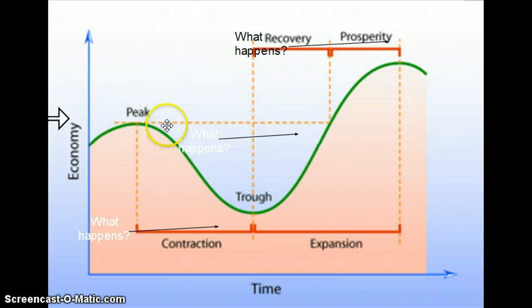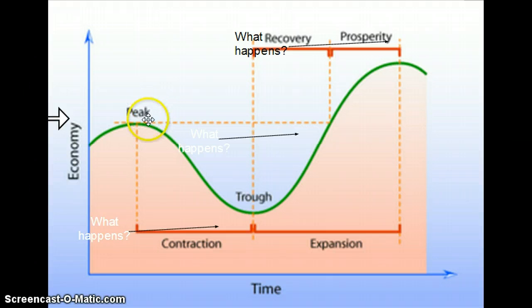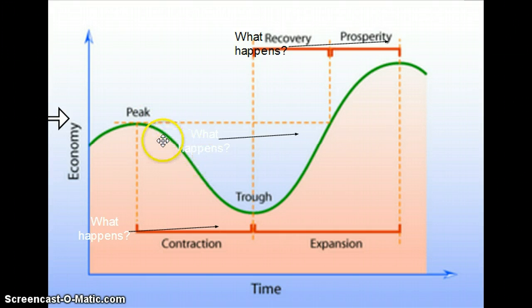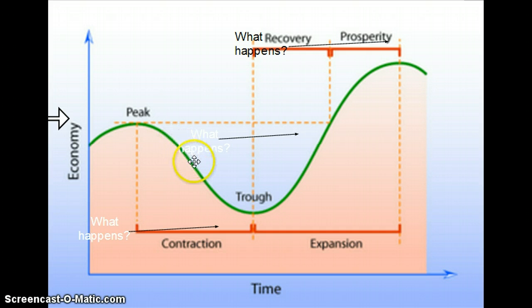This downturn can happen for a number of reasons. Examples include the housing collapse back in 2008 and 2009, which pushed us into a recession. When we experience a contraction period, unemployment tends to rise — more people are being laid off, more people without jobs. Also during this time, retail sales are sluggish and consumer confidence is down.